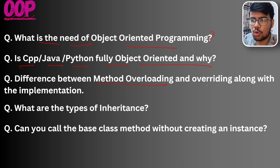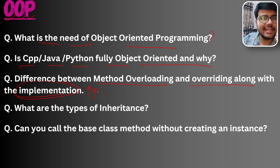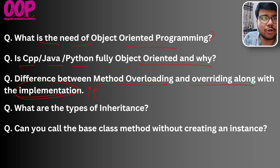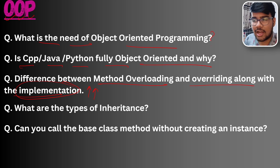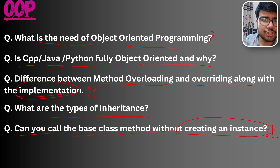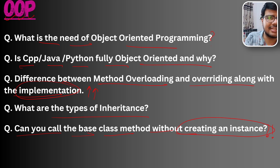The difference between method overloading and overriding, along with their implementation, is highly asked nowadays. Most of the time, implementing polymorphism is the most important question, where people lag because they know the theory but don't know how to write and execute the code. What are the types of inheritance, and can you call the base class method without creating an instance — these are also among the questions we want to highlight.